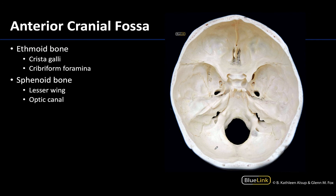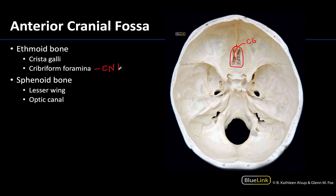Let's turn our attention to the foramina associated with these fossae, starting with the anterior cranial fossa. Focusing on this small median bone in the middle — the ethmoid bone — the ethmoid is wonderfully complex. Running right in the middle is a projection referred to as the crista galli. This is the anterior attachment site of the falx cerebri — the largest dural partition that sits in the longitudinal cerebral fissure will anteriorly attach here. Running next to the crista galli are small foramina called the cribriform foramina, which transmit olfactory axons of cranial nerve 1.